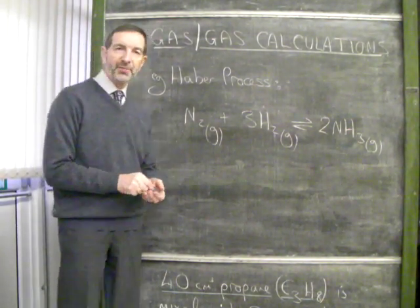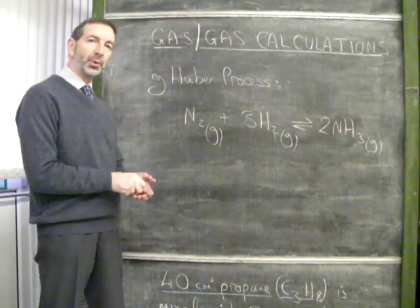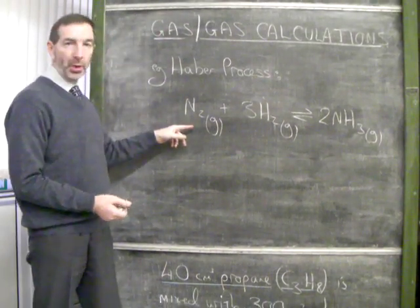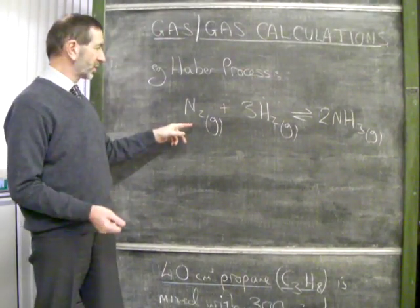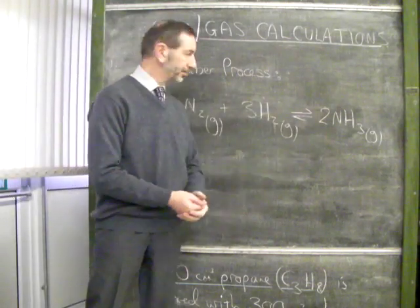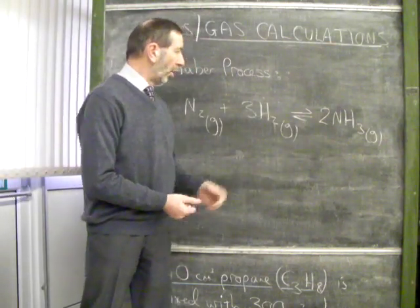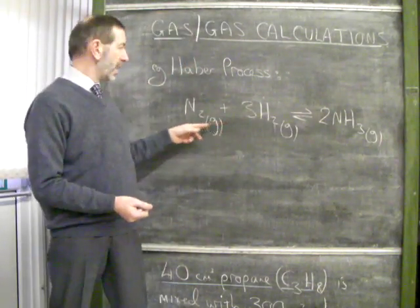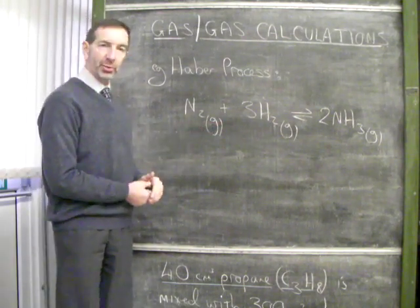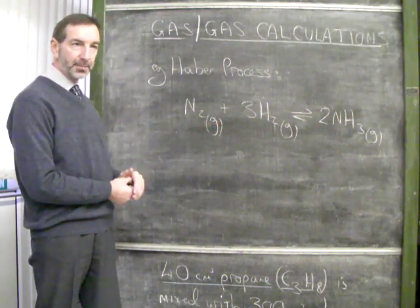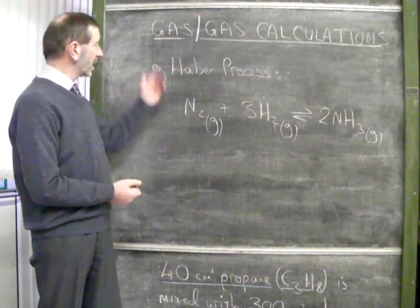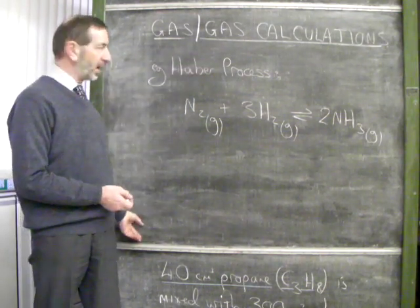Most chemistry calculations involve a relationship between two chemicals. For example, in the Haber process, we may have a question such as how much nitrogen is required to produce a certain amount of ammonia, or how much hydrogen would react with a certain mass of nitrogen? But if the calculation involves two gases, then there is a shortcut we can take — that's why this is called gas-gas calculations.